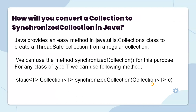How can you convert a collection to a synchronized collection in Java? Java provides easy methods in the java.util.Collections class to create thread-safe collections from regular collections. We can use the synchronizedCollection method. For any class of type T, we can use static methods like Collections.synchronizedCollection(collection) to simply make it a synchronized collection.